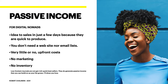From idea to sales in just a few days because they're quick to produce. You don't need a website or email lists — forget all that. Very little or no upfront costs. Affinity Publisher is really quite cheap and it's on sale at the moment. There's no marketing and no inventory. Now, low-content journals are not get-rich-quick bestsellers — they're not meant to be. They do generate passive income that you can build on as your list grows.